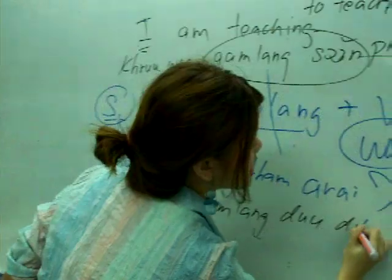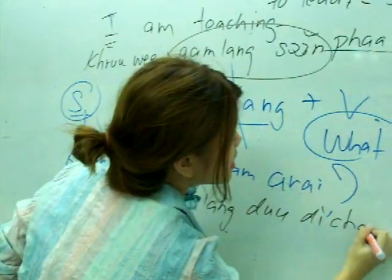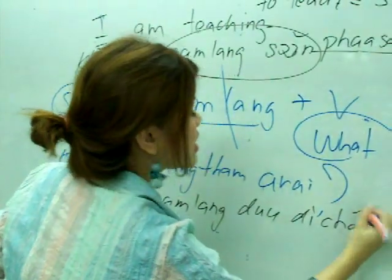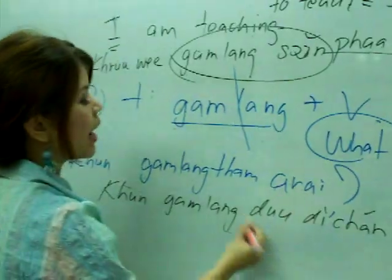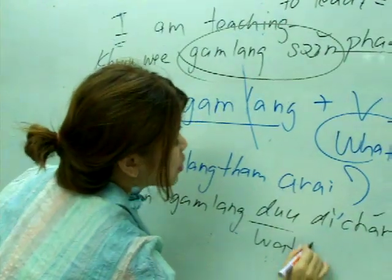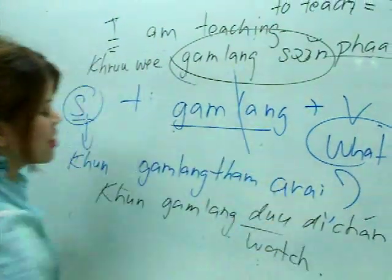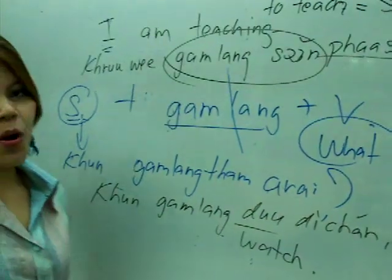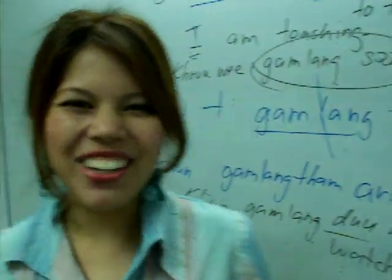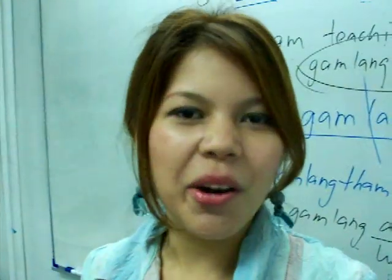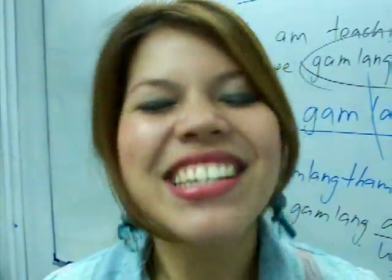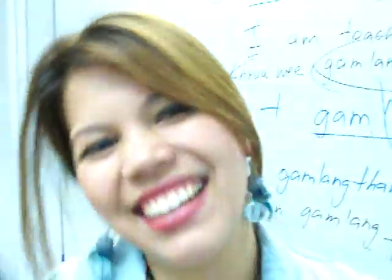คุณกำลังดูฉัน — you are watching me. ดู (du) means 'watch,' and ฉัน (chan) means 'I' or 'me.' So คุณกำลังดูฉัน means 'you are watching me.' สวัสดีค่ะ — goodbye!